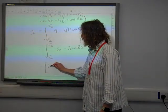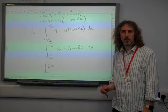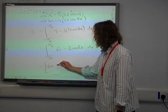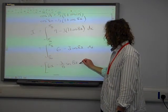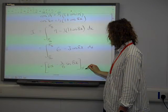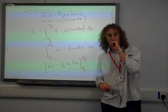Integrate 6 and we get 6x. Integrate cos ax and we get 1 over a sine ax. So we get to that point.